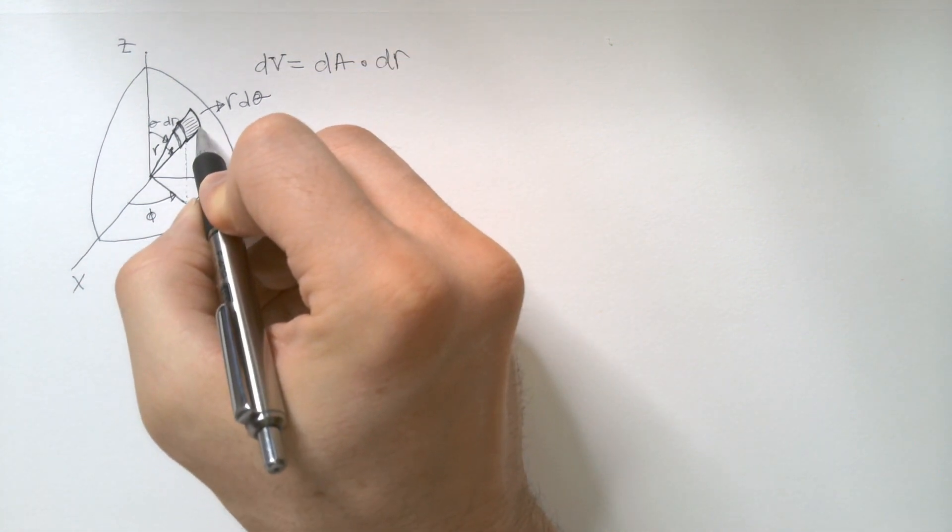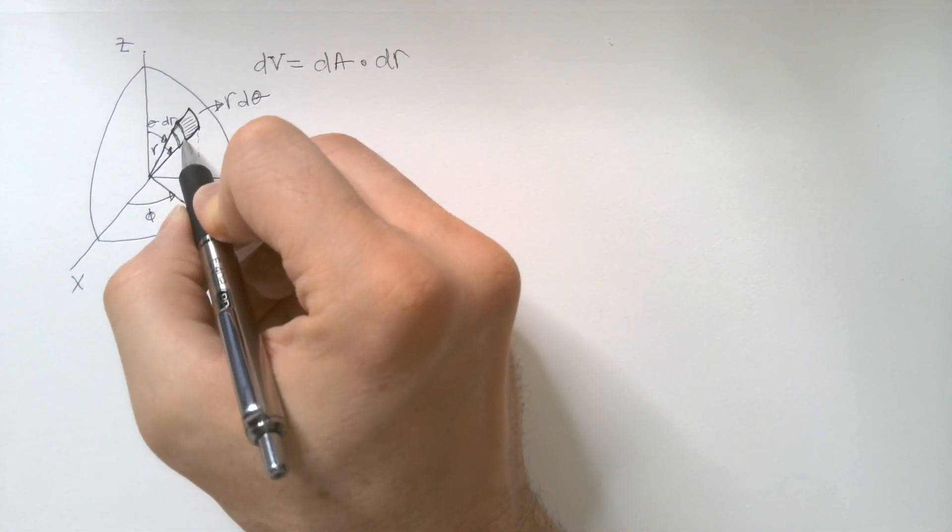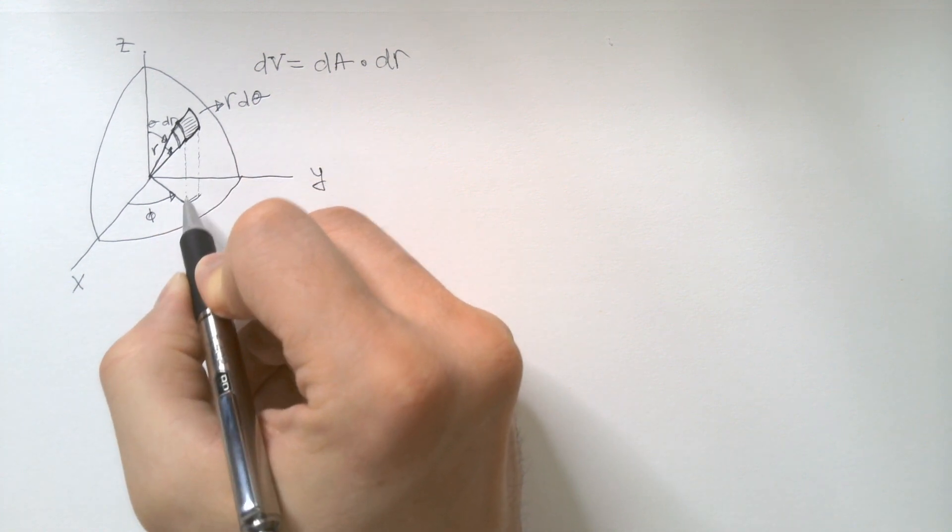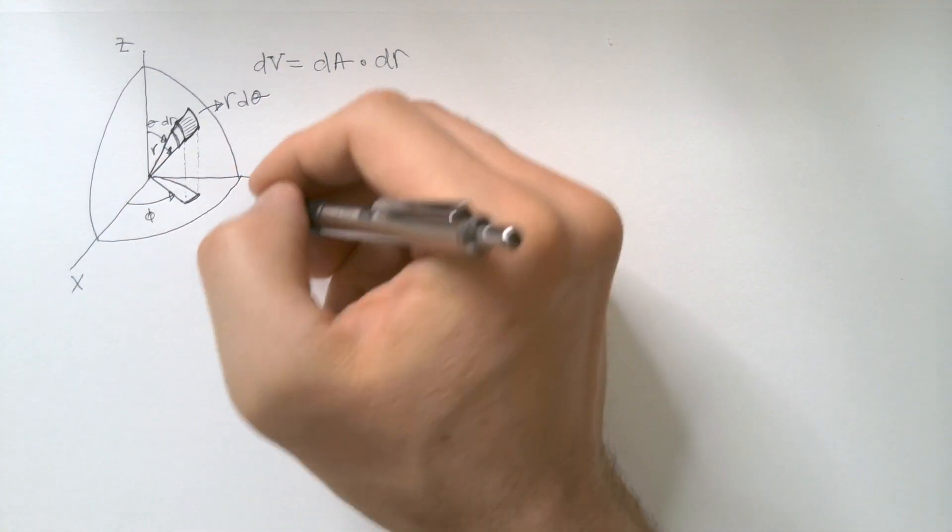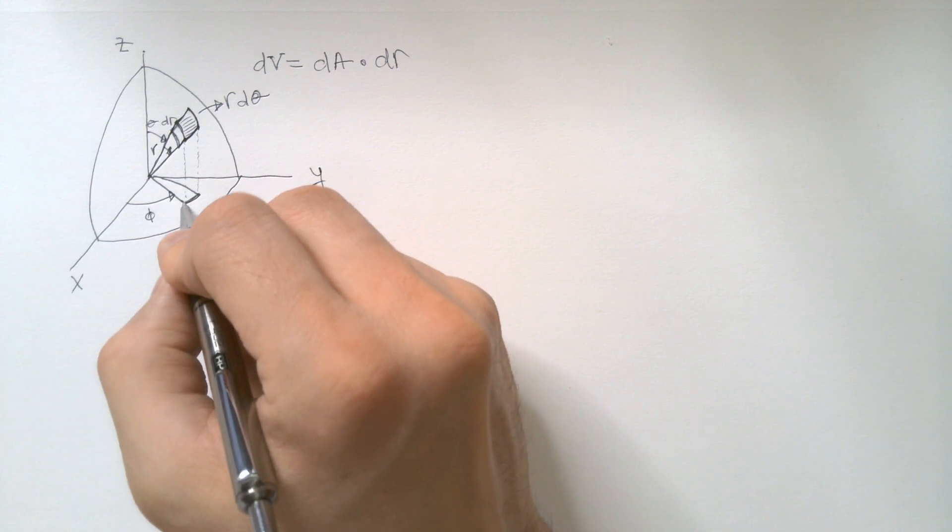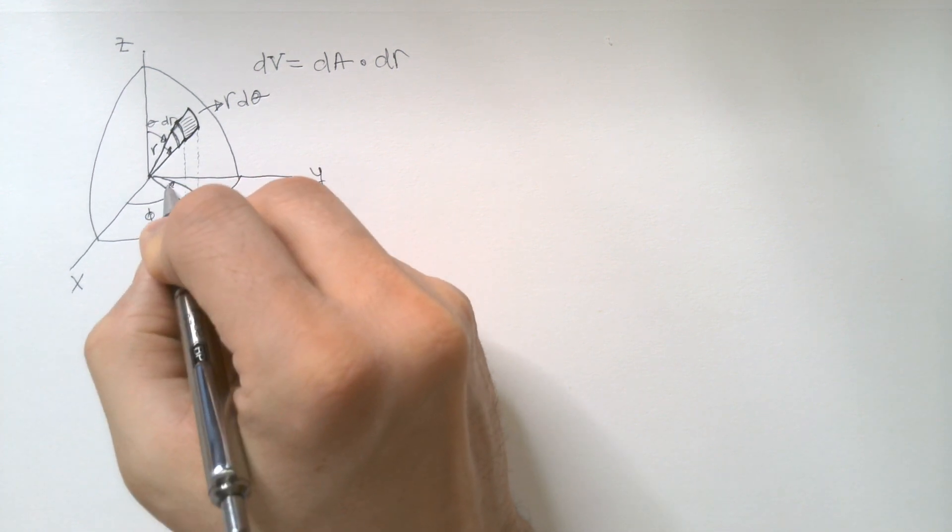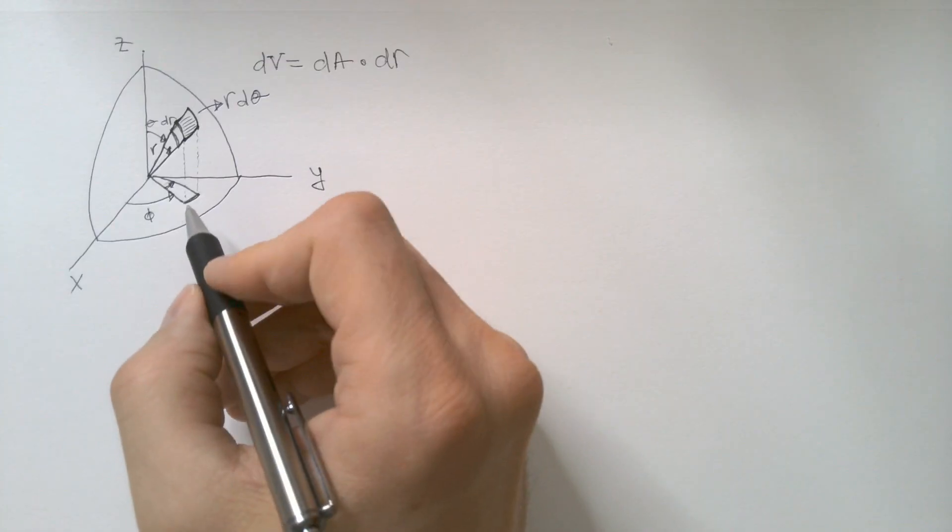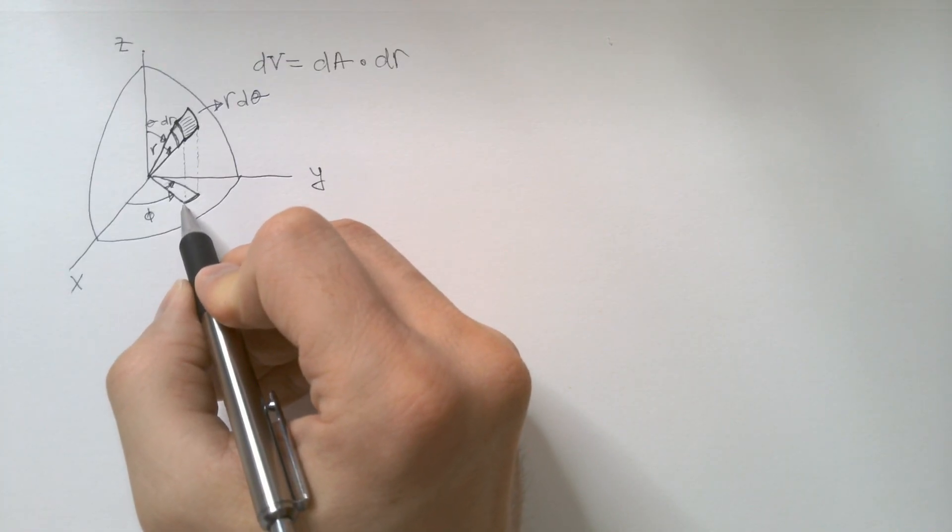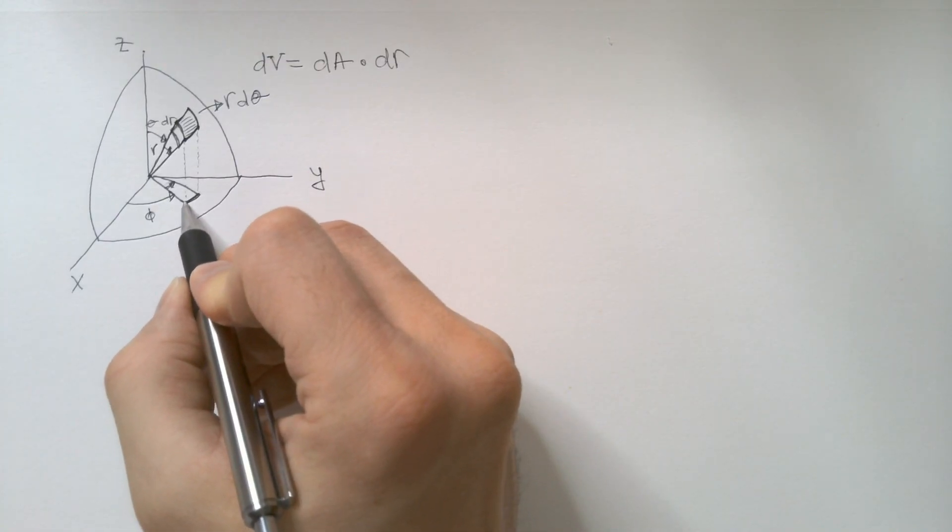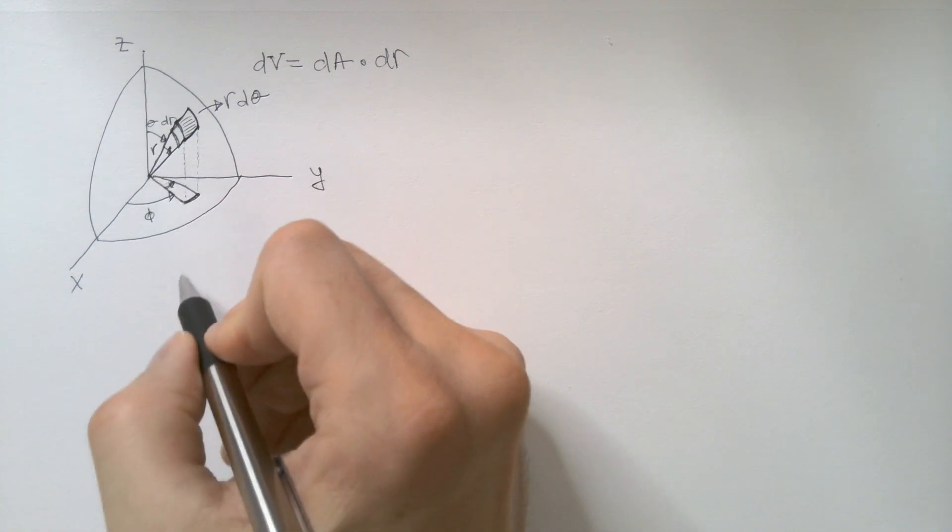Now, how about this side, which is the same as this side? Well, we will find it using our projection over here. To find that, we know that this increment over here is dφ. So, the only thing we need to find, therefore, to find this, is this radial length.